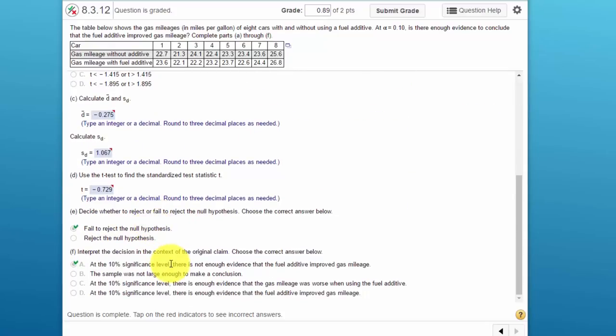One of the limitations of StatCrunch is that if you are doing a paired samples hypothesis test, which this is, and if you are not given the raw data, if you're just given the summary data, then it's difficult to calculate the standard deviation of the differences. But if you are given the raw data, then all of these values you can calculate very quickly.